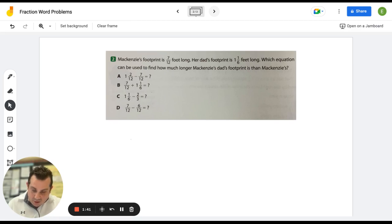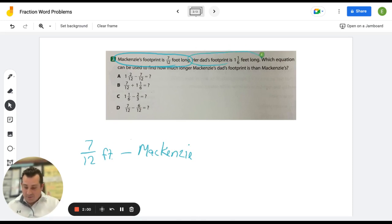We know McKenzie's footprint is 7 twelfths of a foot long. So, I'm going to write 7 twelfths of a foot and put McKenzie. Then I know her dad's footprint is 1 and 1 sixth foot long. So, 1 and 1 sixth foot long. And that's her dad.